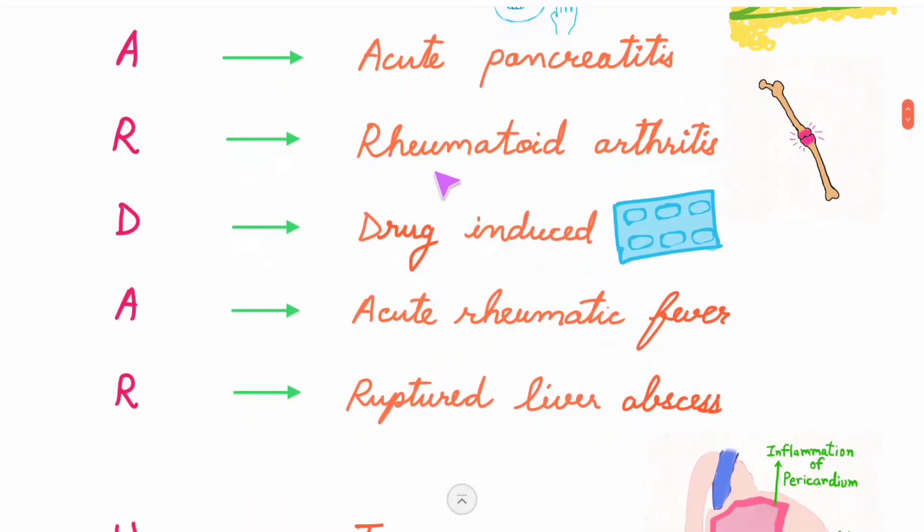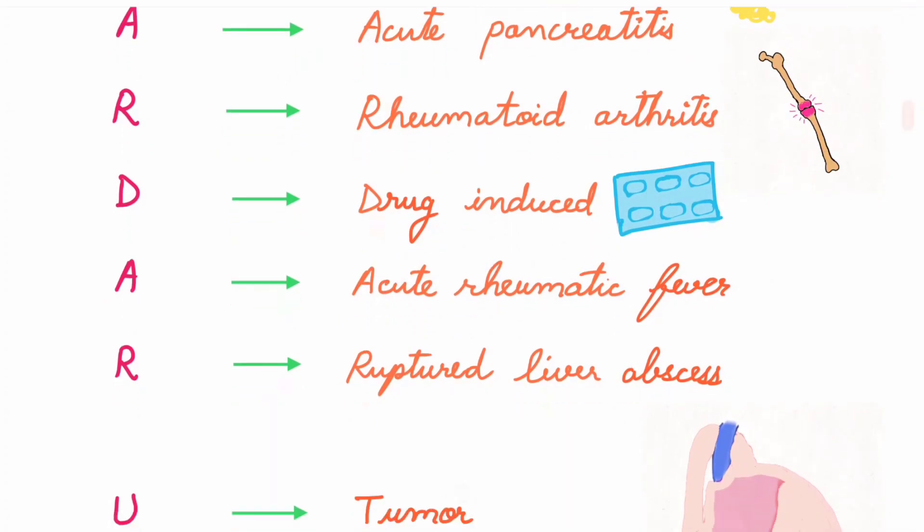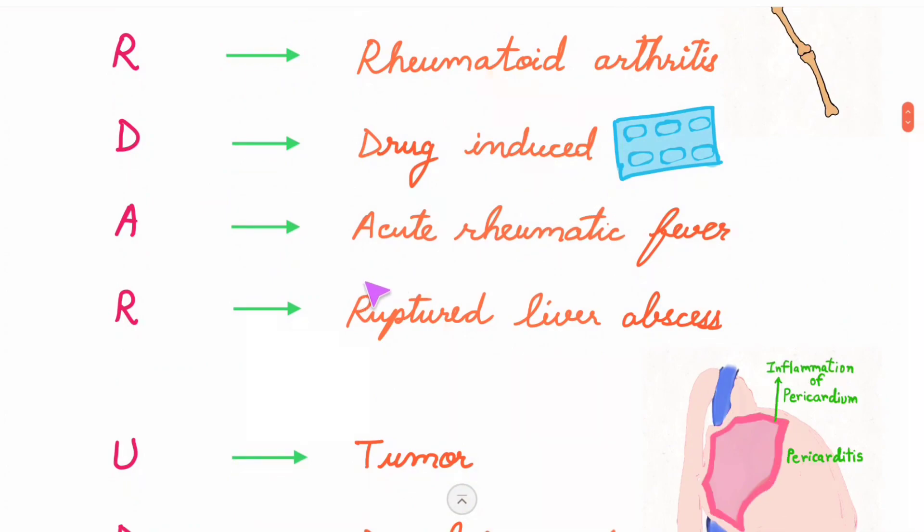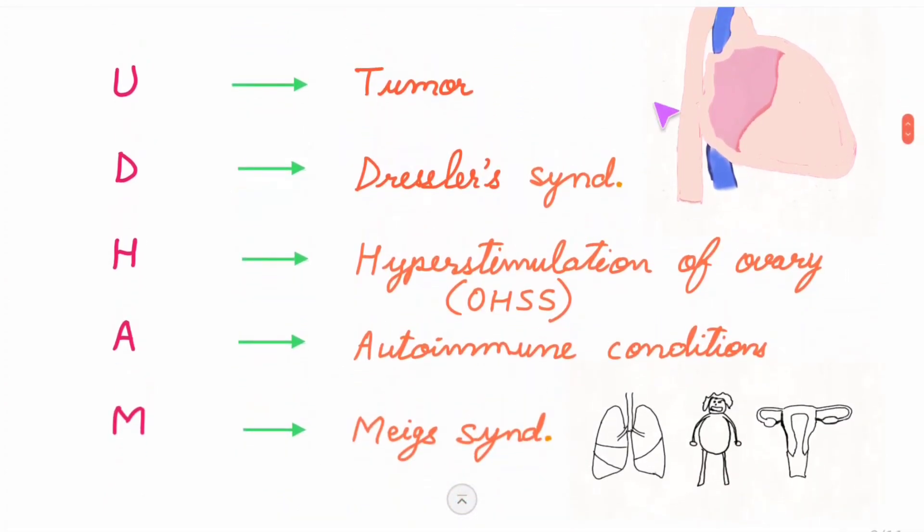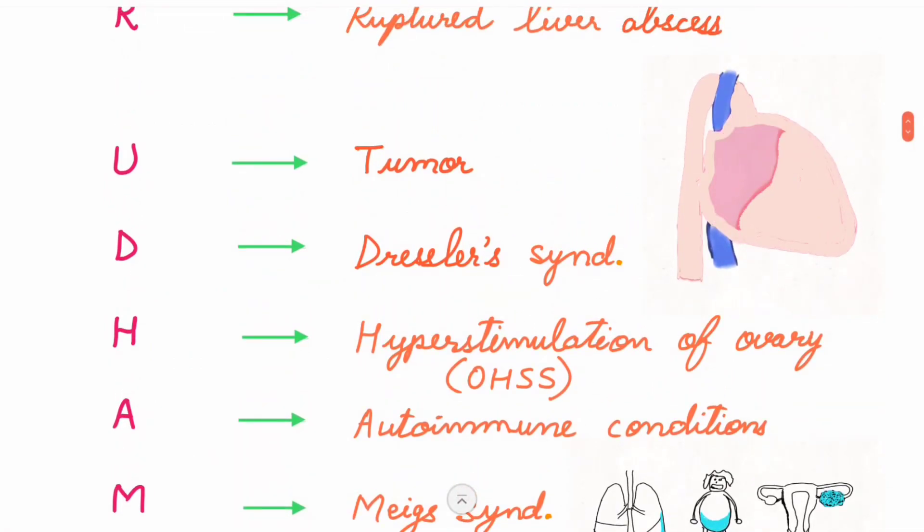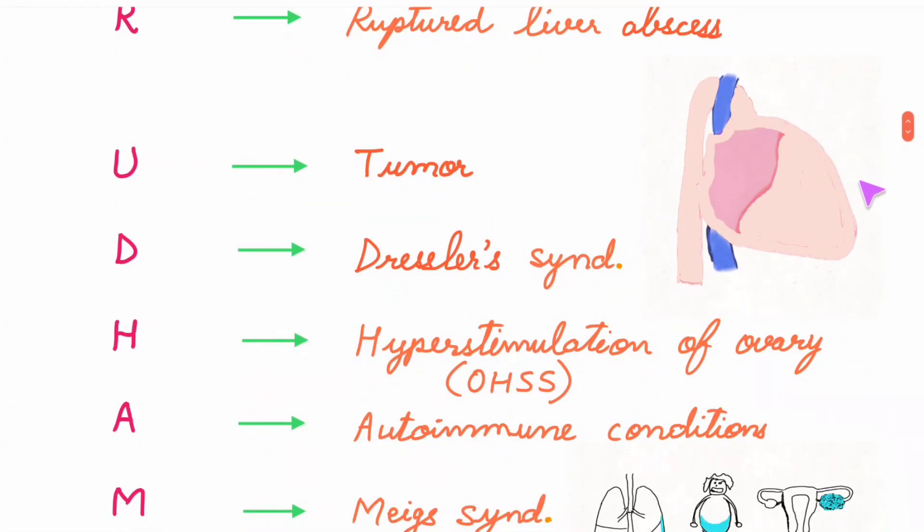R for rheumatoid arthritis - see beautifully in this diagram. D for drug-induced, acute rheumatic fever, ruptured liver abscess, and tumor. Dressler syndrome - what is Dressler syndrome? It's inflammation of the pericardium, the outer layer of the heart - pericarditis.